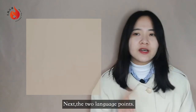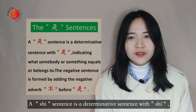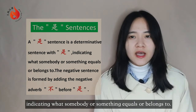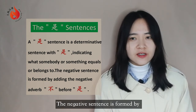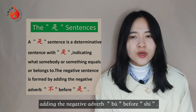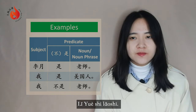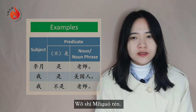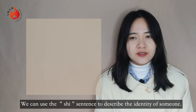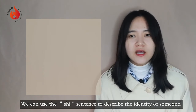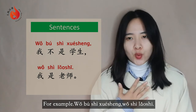Next, the two language points. First: the 是 sentence — a determinative sentence with 是, indicating what somebody or something equals or belongs to. The negative form adds 不 before 是. Examples: 李悦是老师, 我是美国人, 我不是老师. We can use 是 sentences to describe identity. 我不是学生，我是老师.